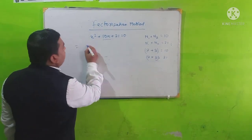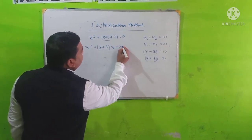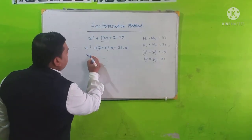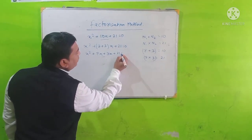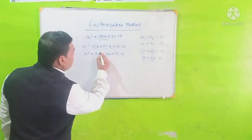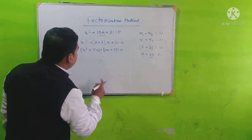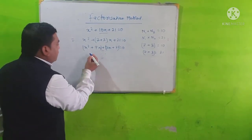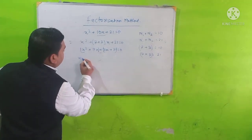Now we split and rewrite the equation as x squared plus 7x plus 3x plus 21 is equal to 0. We then group the terms: (x squared plus 7x) and (3x plus 21).